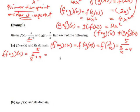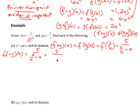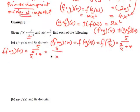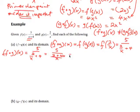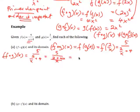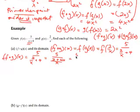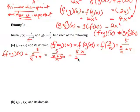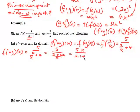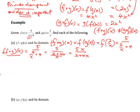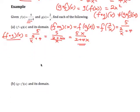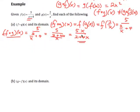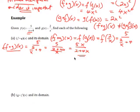Now we need to simplify this. Putting it over a common denominator gives us (2 + 4x) in the denominator. Since we're dividing by a fraction, we invert and multiply. So f∘g(x) simplifies to 5x / (2 + 4x).